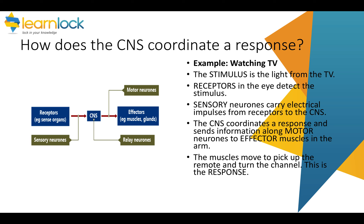So how does the central nervous system coordinate a response? The stimulus is whatever changes in the surroundings — for example, light. Receptors then detect that change; for example, receptors in the eye detect light. These send a message along sensory neurons to the central nervous system — for example, to the brain. The brain then coordinates a response and sends information along motor neurons to the effectors, so to a muscle or a gland.